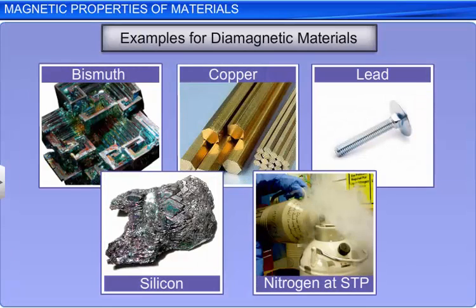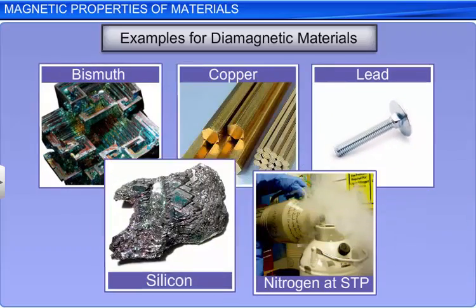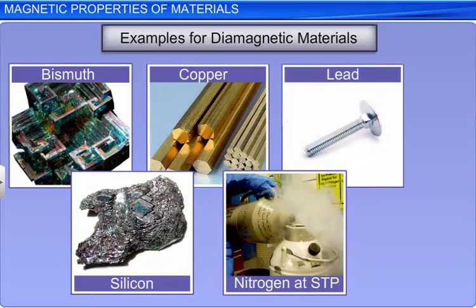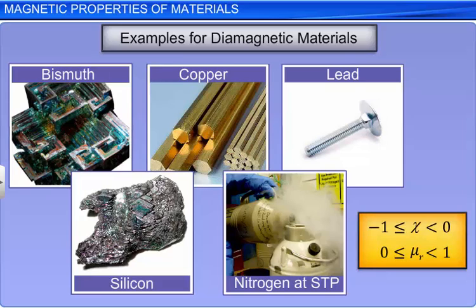Although diamagnetism is present in all materials, its effect is very weak in most of them. Some examples of diamagnetic substances are bismuth, copper, lead, silicon, and nitrogen at STP. The magnetic susceptibility of diamagnetic substances is greater than or equal to minus one and less than zero. The relative magnetic permeability of these substances is greater than or equal to zero and less than one.